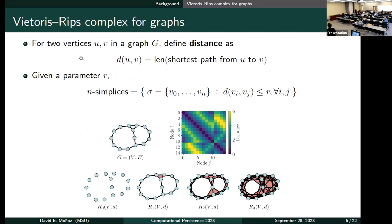Then, we will be working with graphs. For these graphs, we will be using the rips complex. The distance in the graphs is defined as the length of the shortest path between any two nodes. We will be working with undirected graphs, so it will be symmetric.